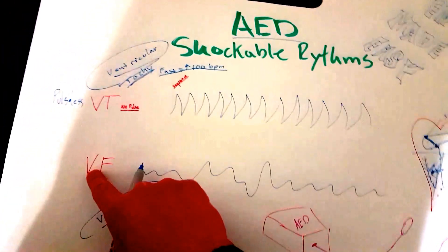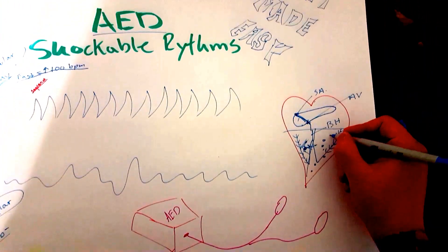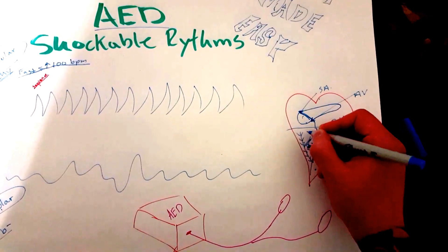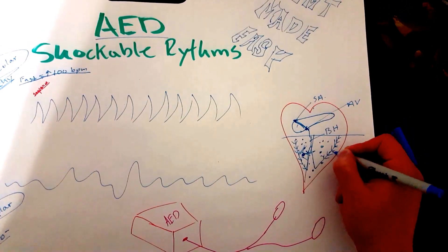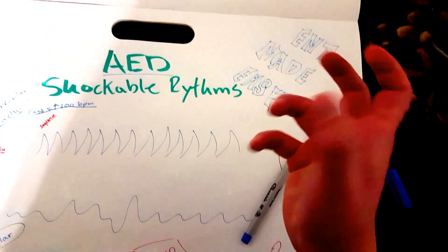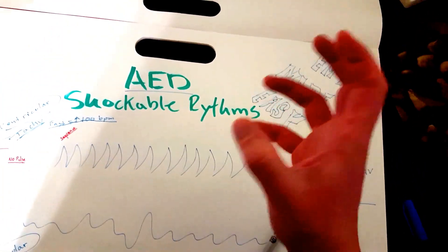With VFib, the electricity is going completely haywire in the ventricles, and electricity is sparking off from many different locations, and it's just kind of making your heart just quiver. It's not even pumping.